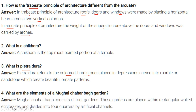Question: What are the elements of the Mughal Chahar Bagh garden? The Mughal Chahar Bagh consists of four gardens — Chahar means four. These gardens are placed within rectangular wall enclosures and divided into four quarters by artificial channels.